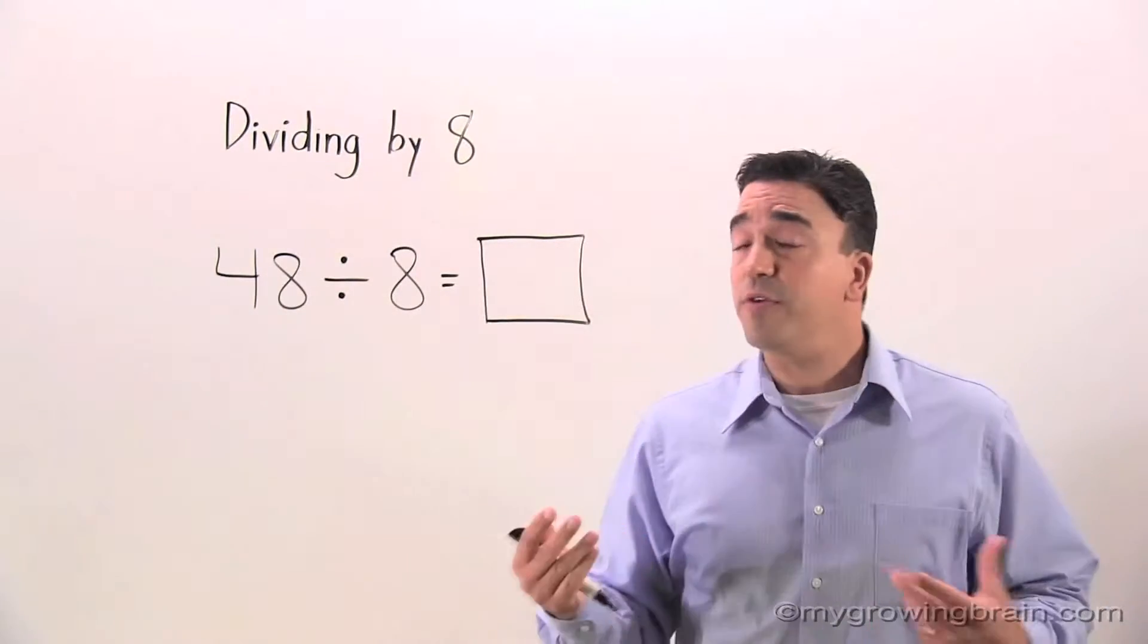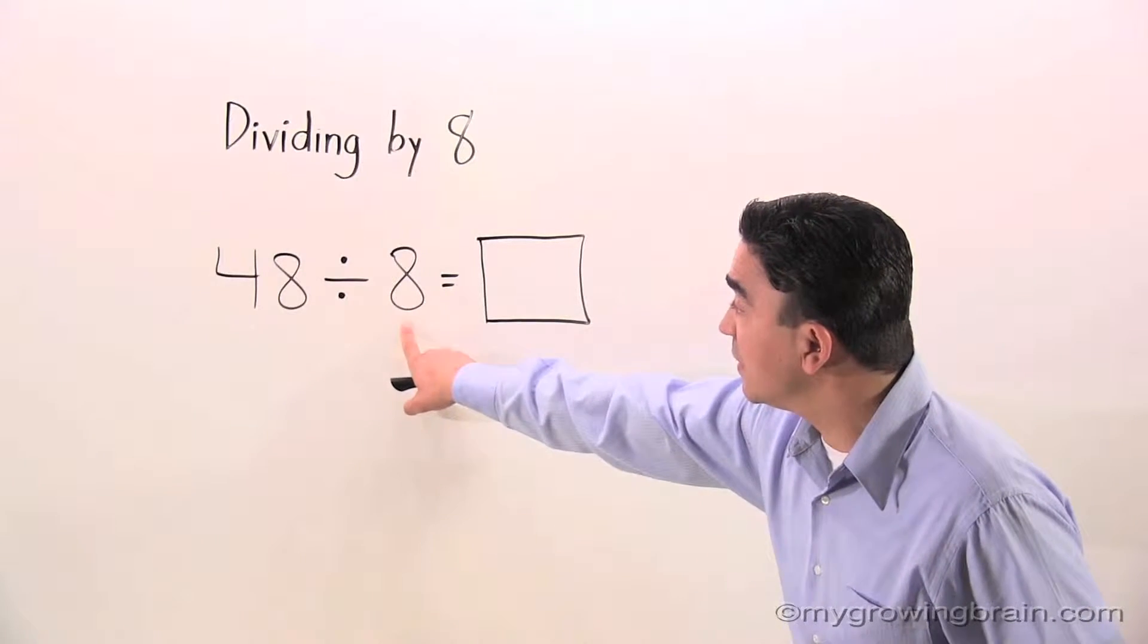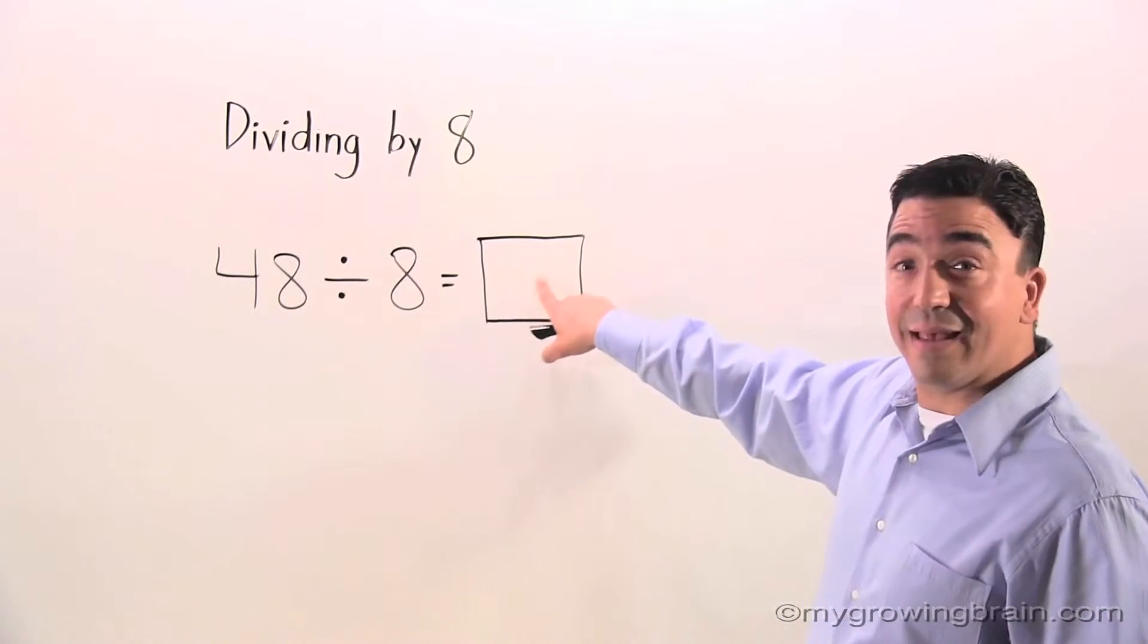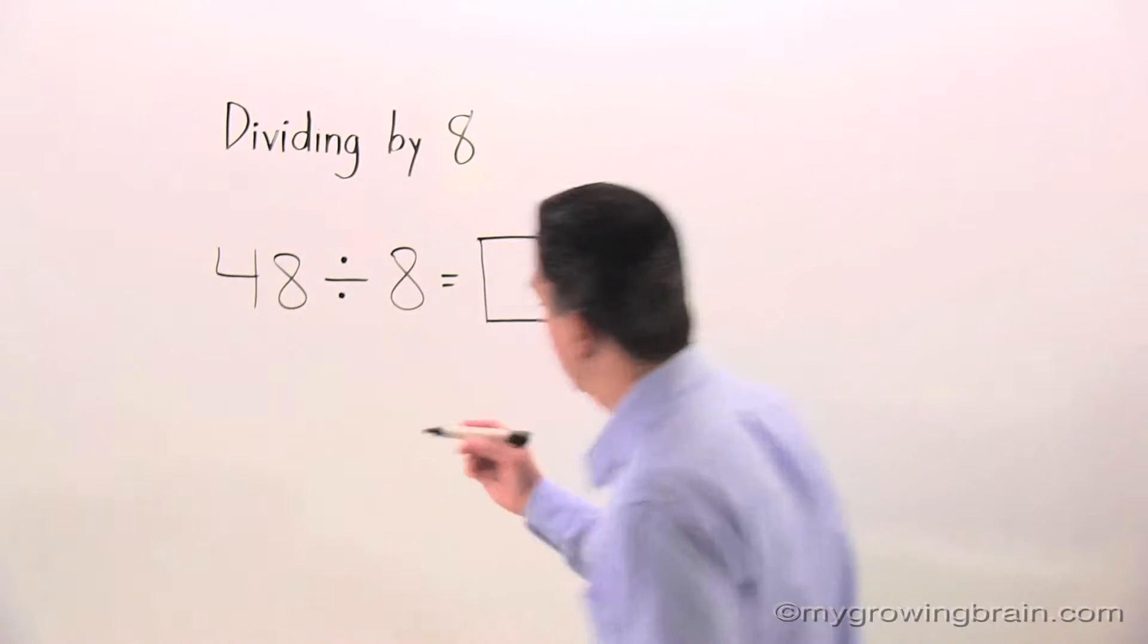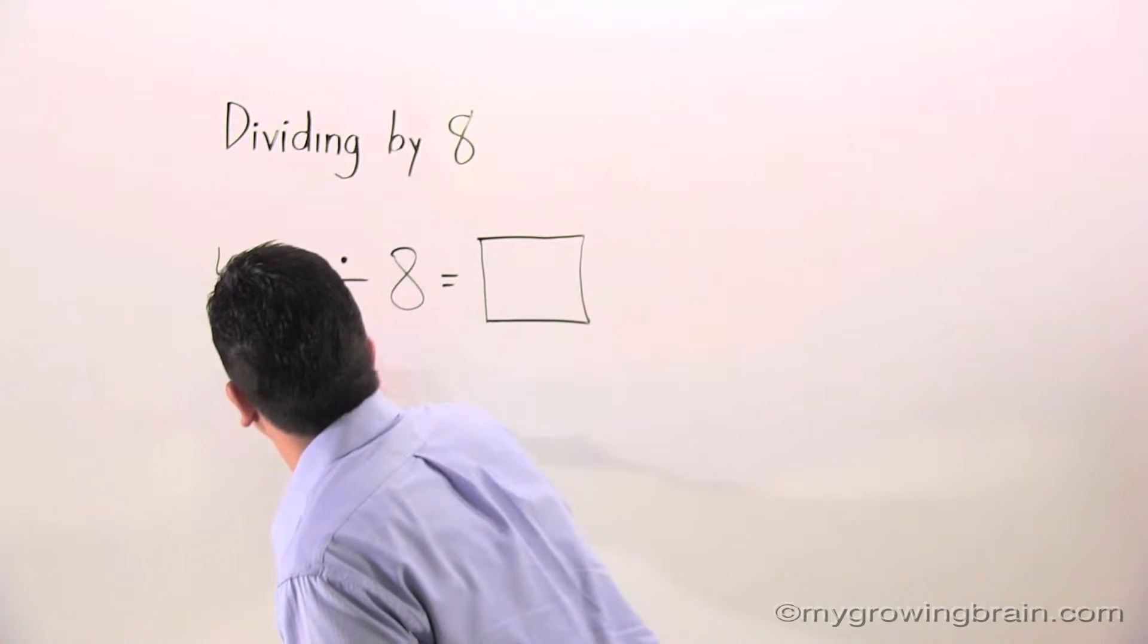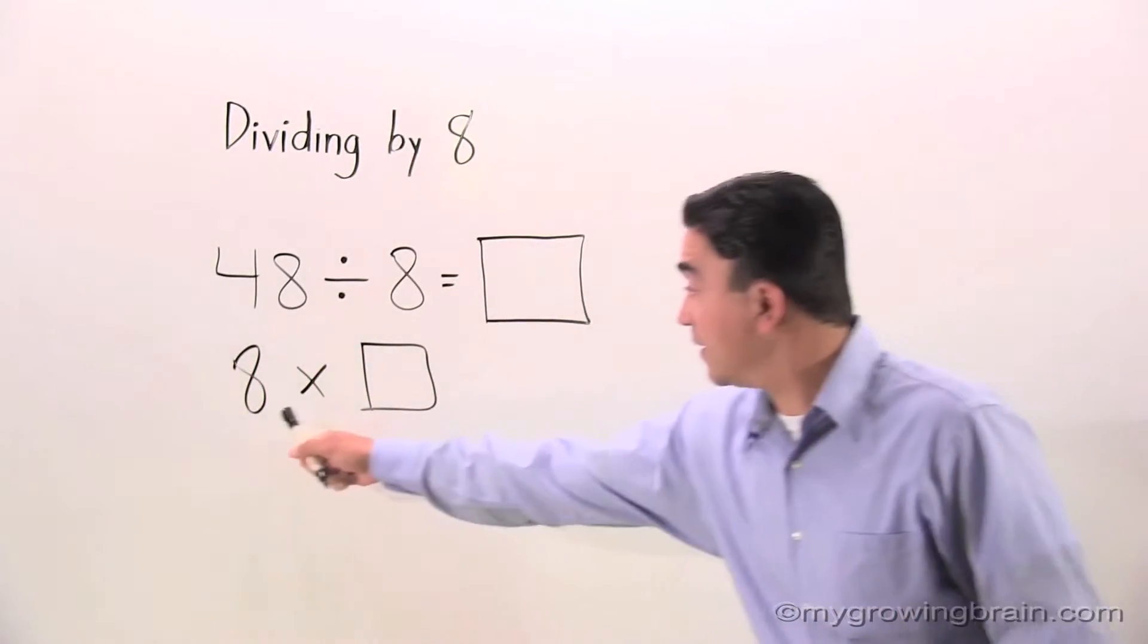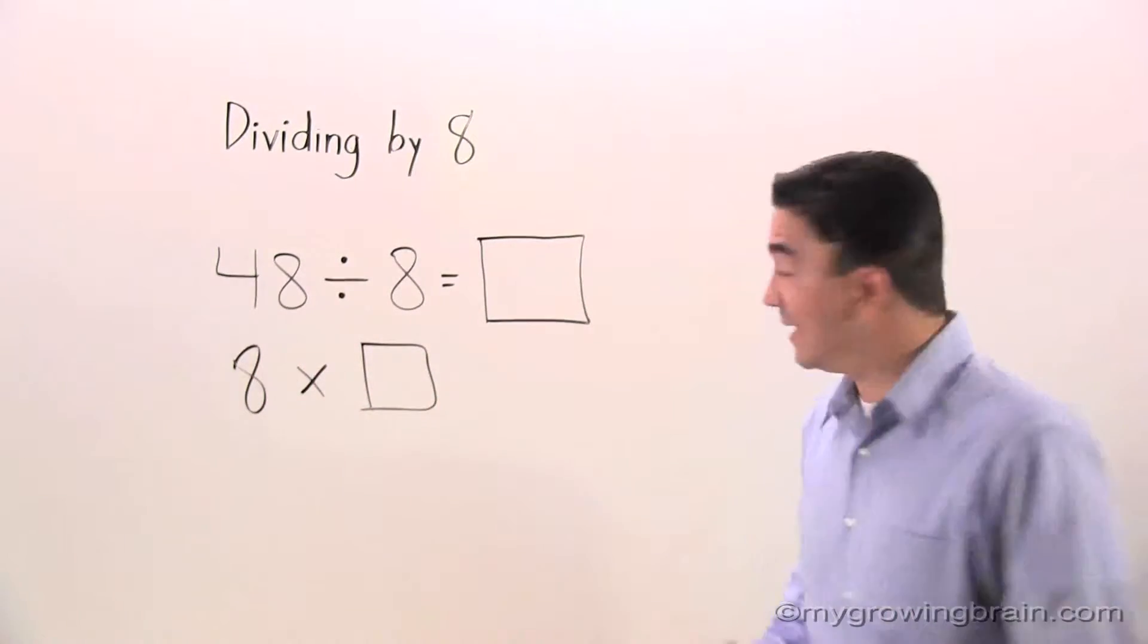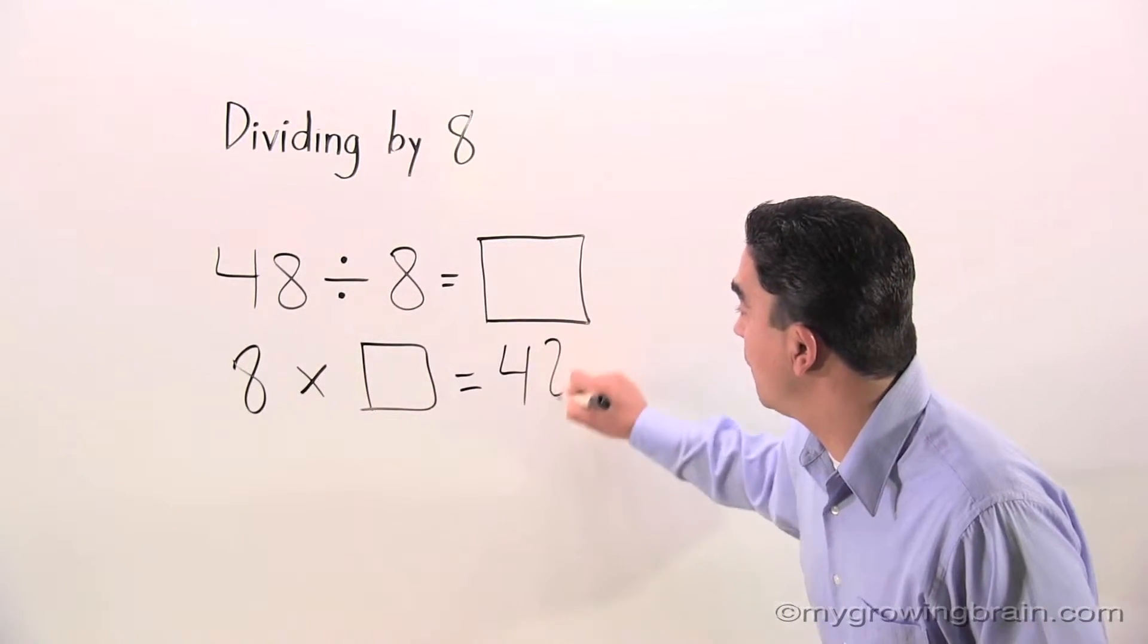So when I look at this, I have to also think about it conceptually. 8 times blank equals 48. Let me show you this. 8 times blank equals 48.